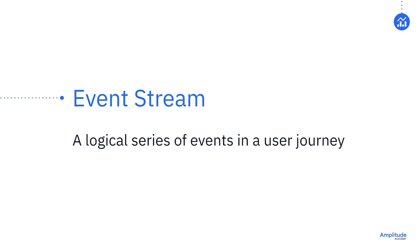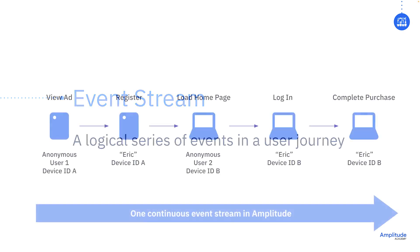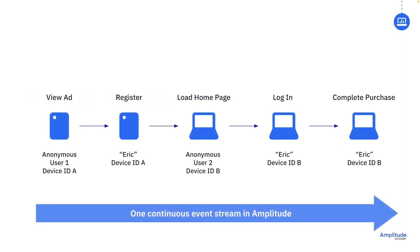If we're talking about a logical series of events a customer might take to complete a journey, we call that an event stream. In this event stream, we see a user beginning by viewing an ad, then they register, load the home page, log in, and finally complete a purchase.